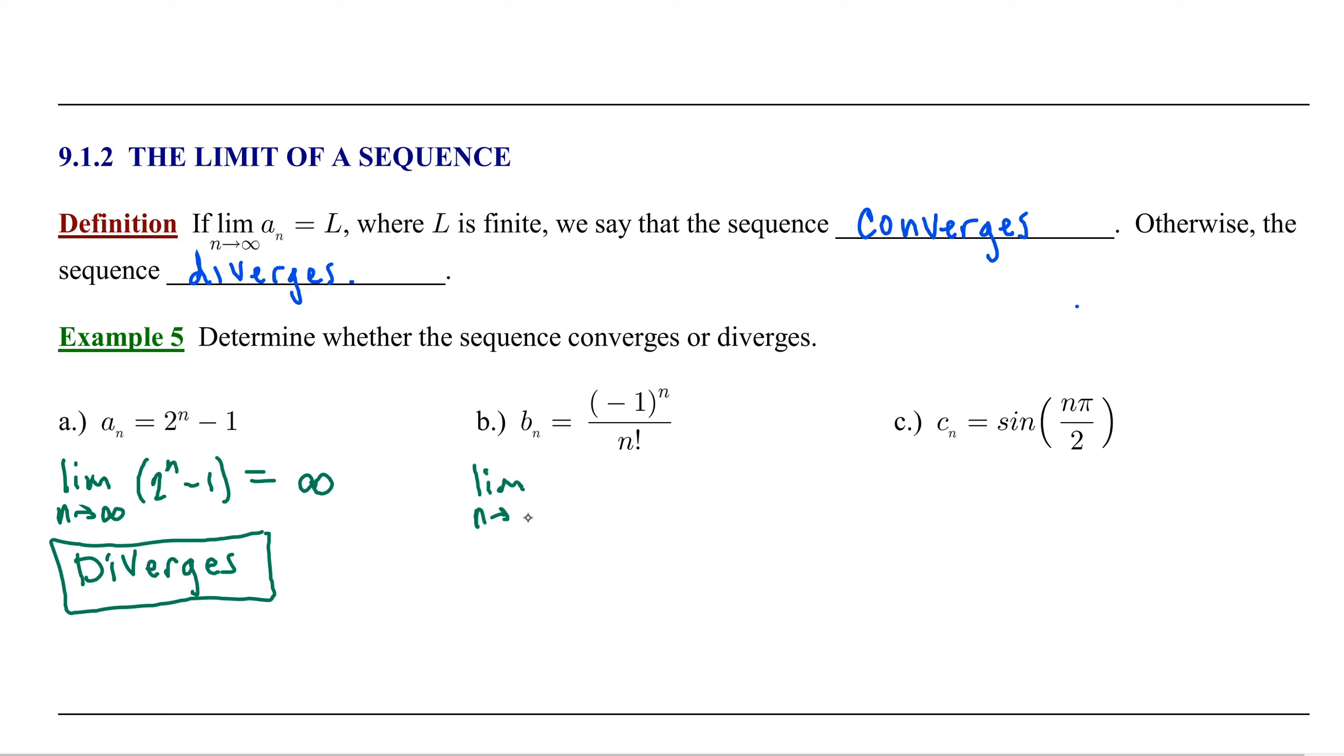To determine if this sequence converges or diverges, we're going to calculate the limit as n goes to infinity of negative 1 to the nth power divided by n factorial. To think about this limit, you may want to consider two options. If we look at negative 1 to the nth power where n is an even number, if n is even,